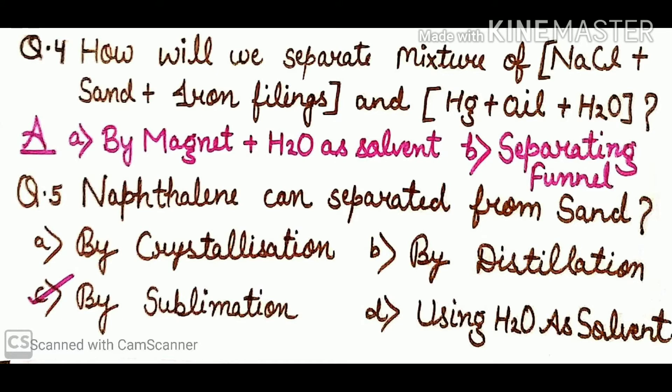Question number 4: how will we separate the mixture of sodium chloride + sand + iron filings? And the next mixture: mercury + oil + water. For the first mixture, since we have iron filings, we use a magnet — the iron filings will be attracted to the magnet. Then what remains is sodium chloride plus sand. When we add water as the solvent, the sand will automatically separate from the mixture.